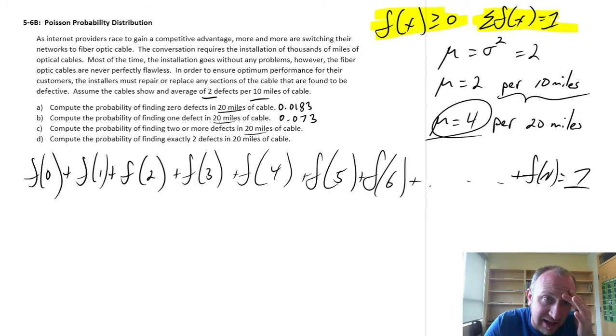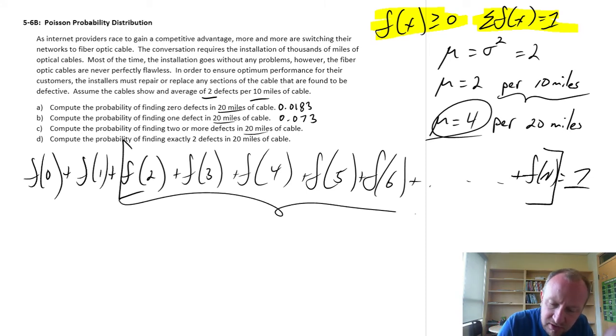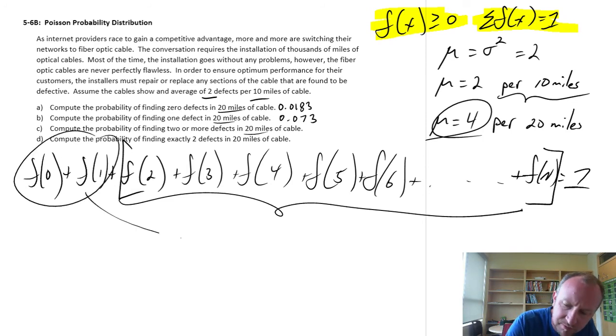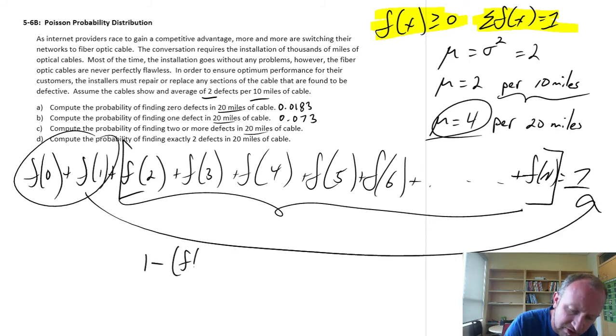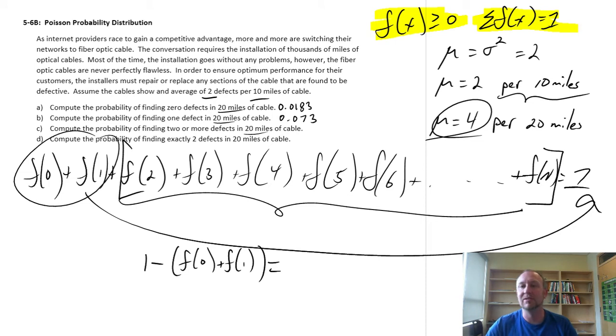So if that's the case, and I want to know what is the probability of 2 or more, so I'm looking at this probability here, well I can just rearrange this identity, this characteristic of the distribution, and solve for this. This summation must be equal to, if I bring this one to the other side, or bring these over to here, I have 1 minus f of 0 plus f of 1. And that will be equal to the rest of those probabilities all added together.